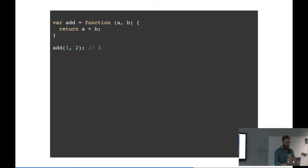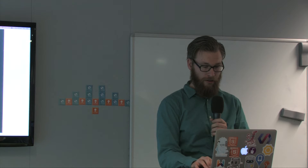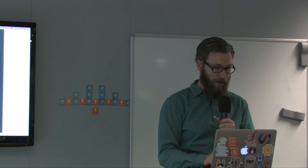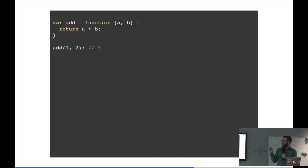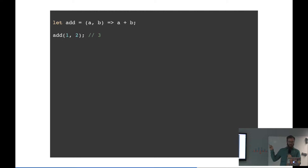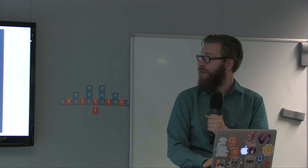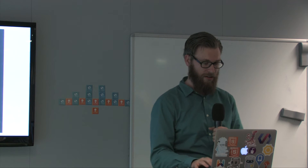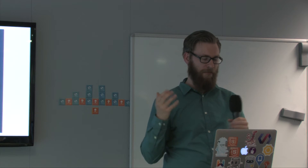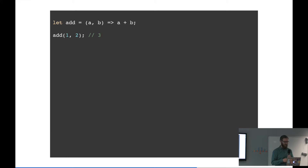Arrow functions also implicitly return the value. So you can assign the result to a new variable. Say you have an add function — simple, it adds a plus b. You can write it like this with a lambda expression: just say these are the parameters, and I want to do a plus b, and directly assign it to a variable. So the function is now stored in add. There are more use cases where you can see where this will be handy.